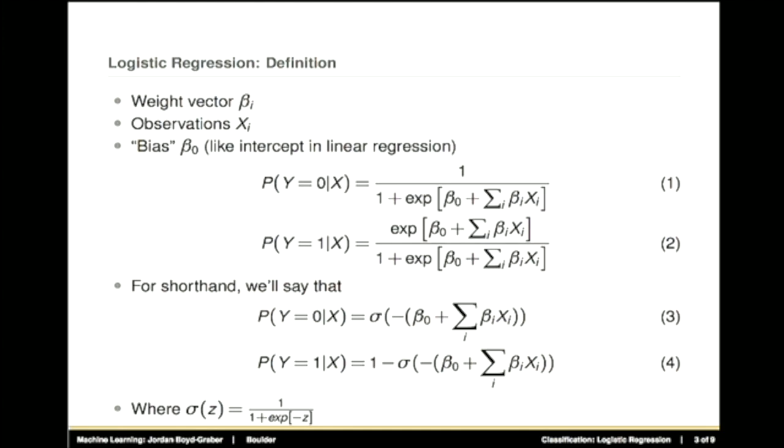So logistic regression has a fairly simple definition. We're going to have some weight vector β and some observations X. What we do to determine the probability of that data being associated with one class or the other, we'll just focus on binary classification here, is based on this formula. We have a vector of our regression weights multiplied by our data vector. That produces some number, and we feed it into this function to determine whether the probability of it being in the zero class or the one class is higher. By convention today, we'll assume that one class is zero, one class is one.